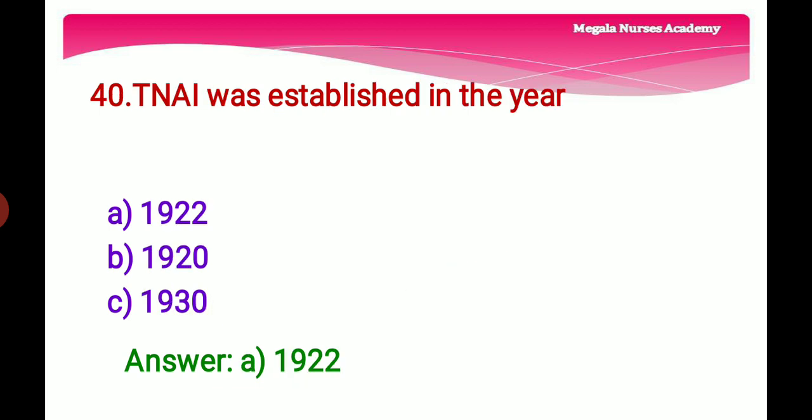Fortieth question: TNAI — Trained Nurses Association of India — was established in the year — Option A: 1922, Option B: 1920, Option C: 1930. The right answer is Option A, 1922, because in 1922 the Association of Nursing Superintendents and Trained Nurses Association united and formed the TNAI.